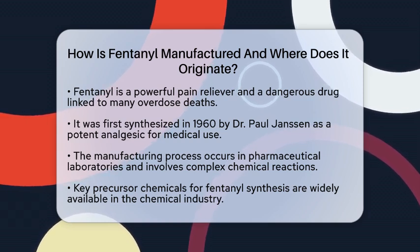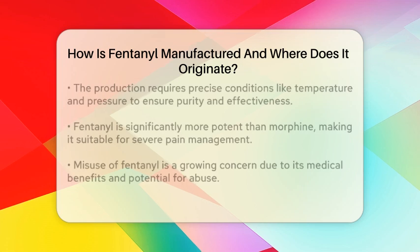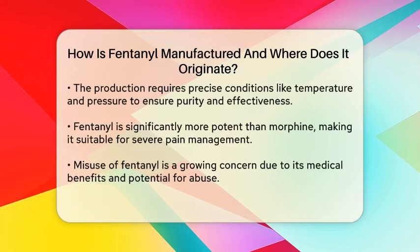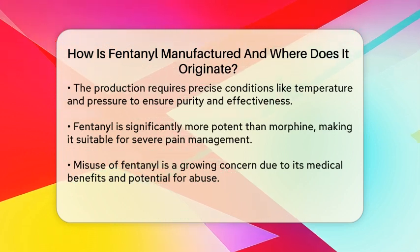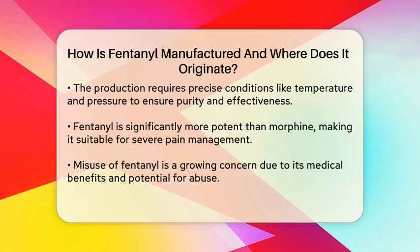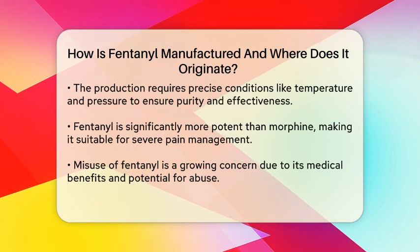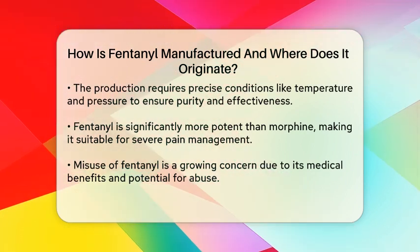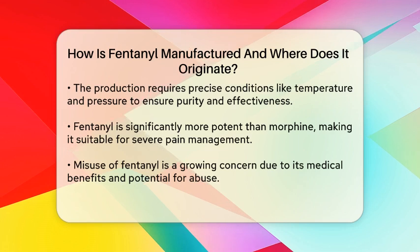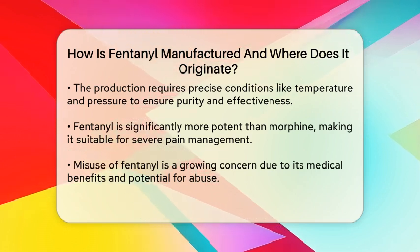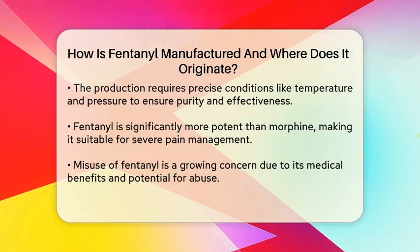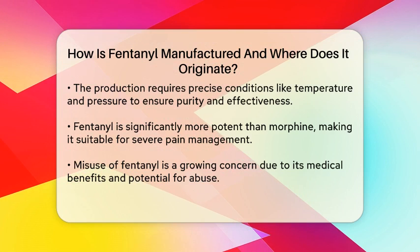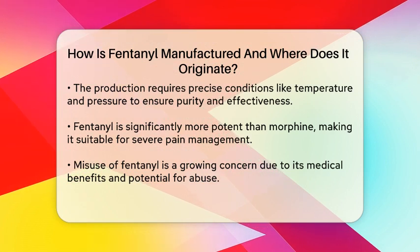The manufacturing of fentanyl involves complex chemical processes that typically take place in pharmaceutical laboratories. The primary precursor chemicals used in the synthesis of fentanyl are readily available in the chemical industry, which makes the production of this substance possible. The process begins with the combination of specific chemical compounds through a series of reactions, requiring precise conditions including temperature and pressure.